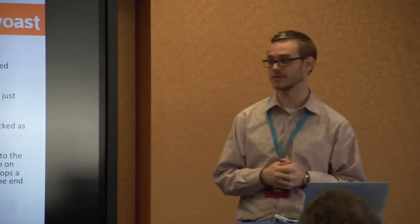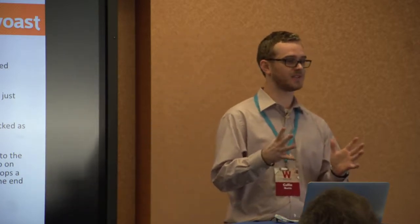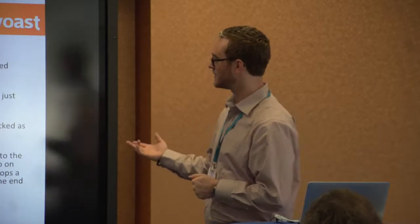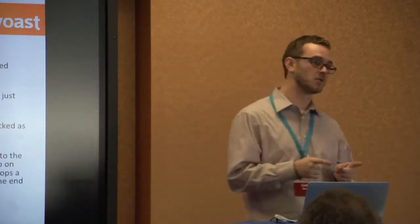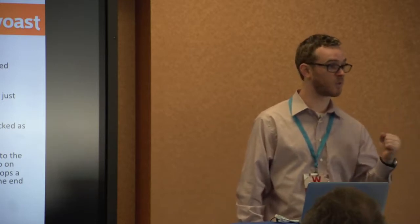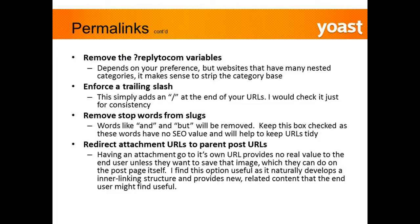For 'redirect attachment URLs to parent post URLs,' if you post a picture inside an article and click on that image, it normally takes you to a blank page with just that image. With this option selected, if you've reused an image in a different article, it will redirect that URL back to the parent post — whatever the first post you used that picture in. This way, clicking on that image takes them to another piece of related content they might find useful.